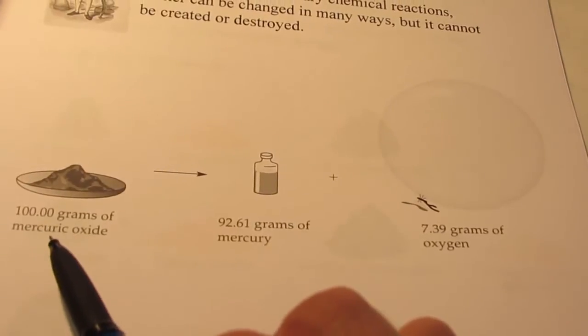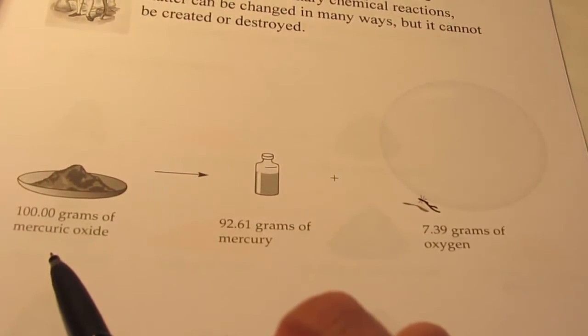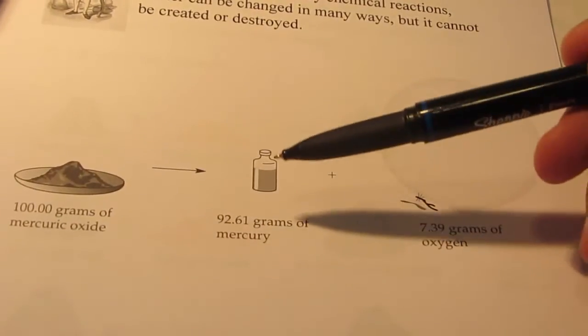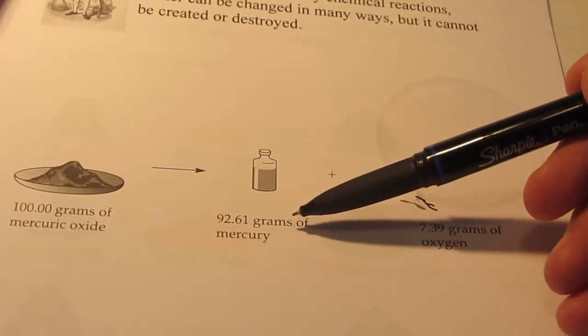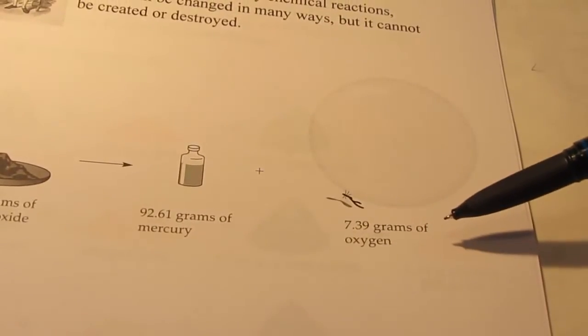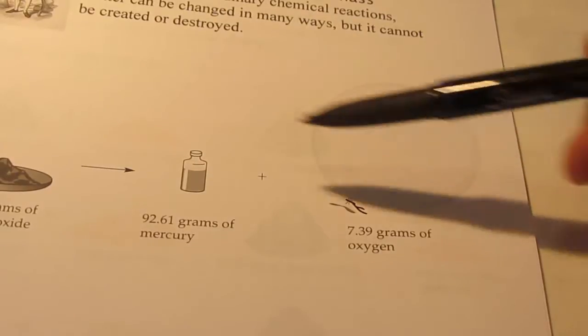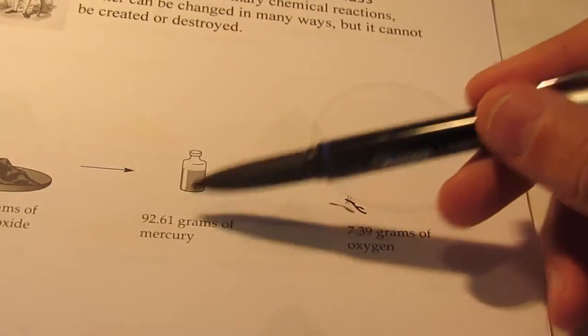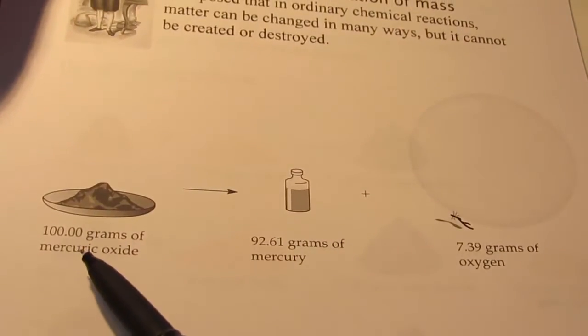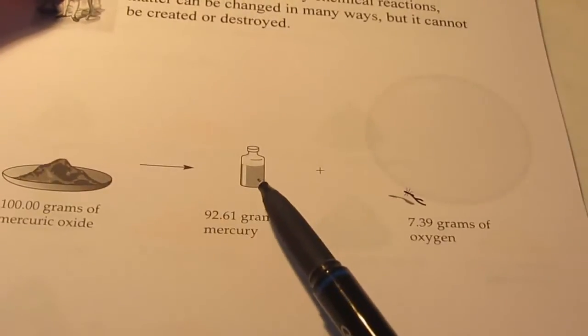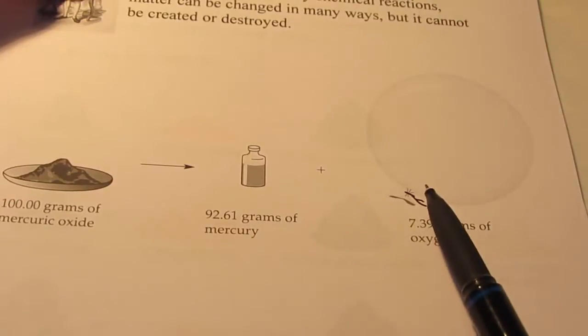If he took 100 grams of mercuric oxide and heated it strongly, after he did that, he would collect 92.61 grams of mercury and 7.39 grams of oxygen. Now of course the sum of these two masses, 7.39 and 92.61, add up to the 100.00 grams of the mercuric oxide. Matter cannot be created or destroyed, but the atoms were rearranged. In this case, they were decomposed into their elements.